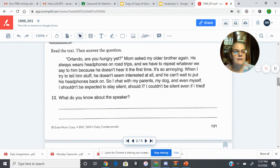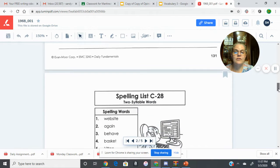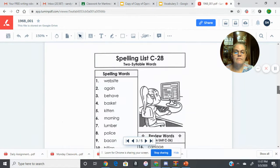We're going to go ahead and start. We've got some dialogue like we did last week in grammar. Orlando, are you hungry yet? Mom asked my older brother again. He always wears headphones on road trips and we have to repeat whatever we say to him because he doesn't hear it the first time. It's so annoying. When I try to tell him stuff, he doesn't seem interested at all and he can't wait to put his headphones back on. So I chat with my parents, my dog, and even myself. I shouldn't be expected to stay silent, should I? I couldn't be silent even if I tried.